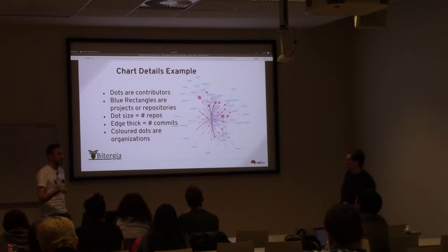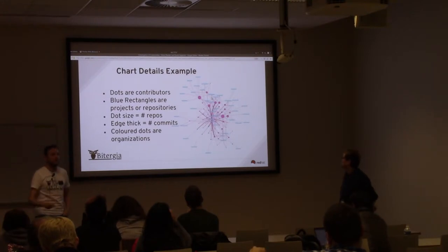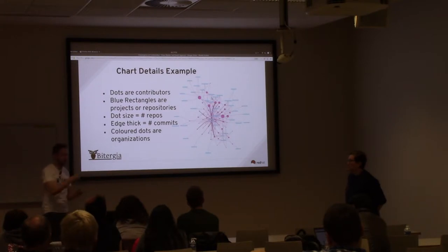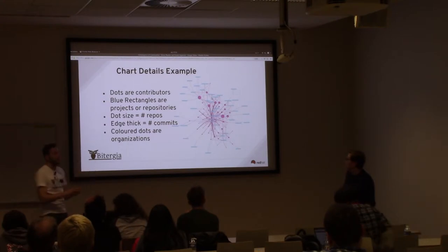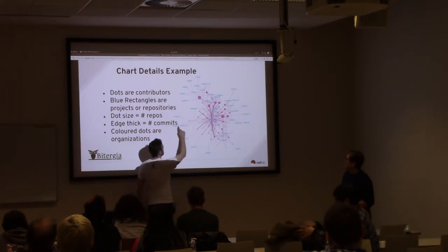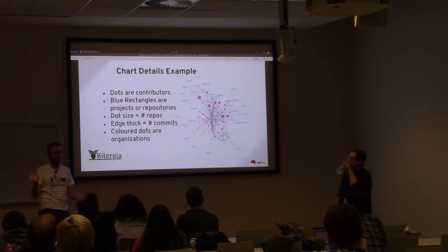Just a bit of introduction about the charts we're going to see. This is a social network chart. Think of the dots - the pink dots are developers. If a dot has a different color, it's because that developer is coming from a certain company: Red Hat will have a color, Google will have another color, et cetera. The size is the size of the contributions of that developer to a specific repository or project. The blue squares are basically repositories or projects. We have a connection between a repository and a developer if they have committed something in a certain period of time.